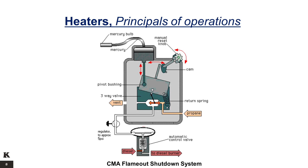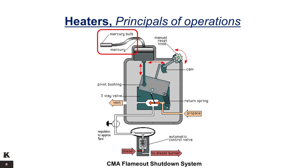The CMA flame-out shutdown system closes a pneumatic safety valve in the fuel line when the propane gas pilot light goes out. By turning the manual reset knob to the right, the gas inlet in the three-way valve opens, and gas passes to the safety valve servomotor and the pilot simultaneously. The safety valve opens and the pilot can be lit with the igniter. Once the pilot is alight, the mercury in the sensor and the capillary expands and pushes the stem down on the pivot bushing. This causes the orifice to remain open even when the manual reset knob is released. If the pilot flame goes out, the mercury in the capillary tubing cools down, the stem retracts and the return spring causes the valve handle to move, closing the inlet. As the safety valve servomotor is no longer supplied with gas, the valve closes by means of its return spring. Consequently, there is no danger of fuel being supplied to the main burner when the pilot is not alight.